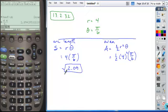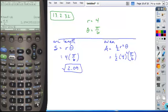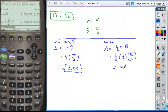Again it's in decimal form, so we can just calculate. So 0.5 times 4 squared times pi over 6. I have a decimal in there, so it'll display my answer as a decimal, and I get about 4.19 for that area.